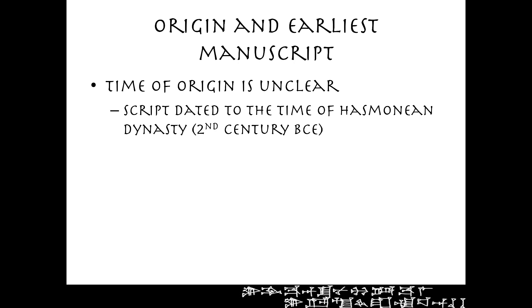When we consider the origin of the Samaritan Pentateuch and the earliest manuscript, we see that the origin is unclear. In some ways, like the Masoretic text tradition, we don't know exactly when it started. The script has been thought to be very ancient since it looks like Paleo-Hebrew script, but as it turns out we can date it at least with some degree of certainty to the Hasmonean dynasty of the second century BCE. So it is no more ancient than the other sources that we have.